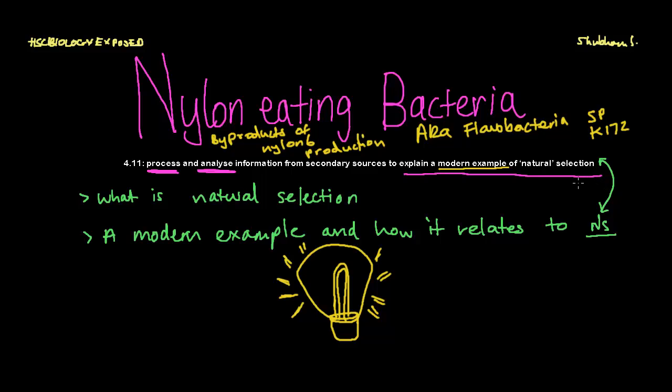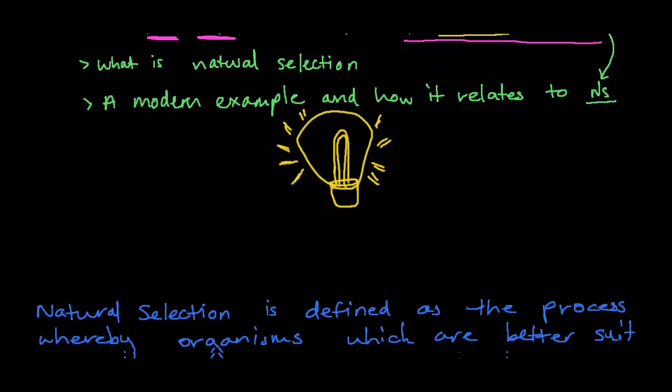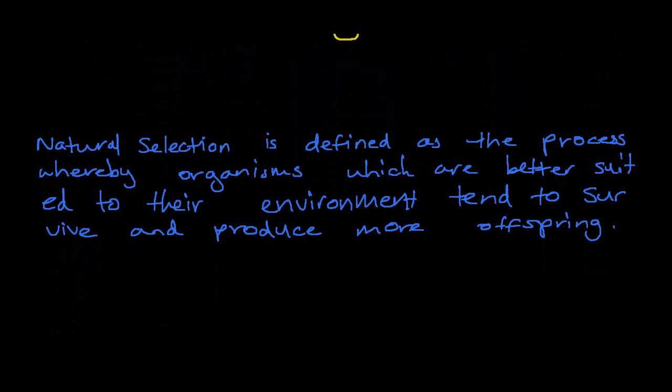So first off, that brings me to what is natural selection? You guys must have covered it in year 11. And if you haven't, here's a quick recap. Natural selection is defined as the process whereby organisms which are better suited to their environment tend to survive and produce more offspring.